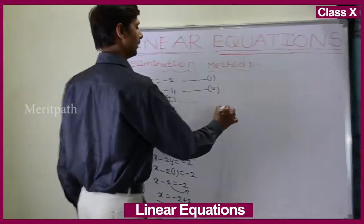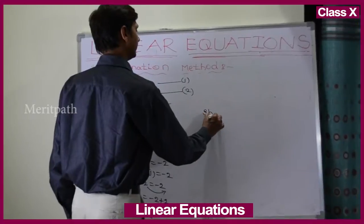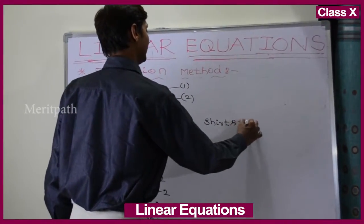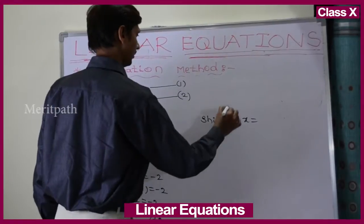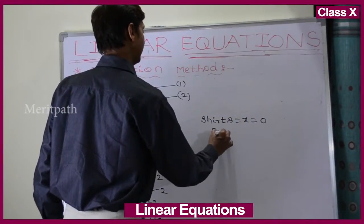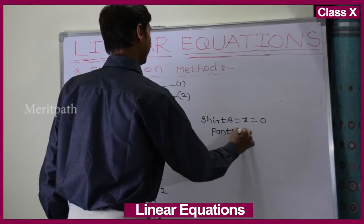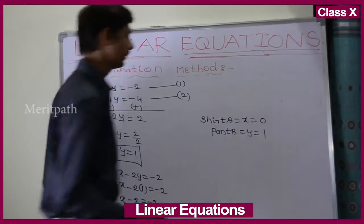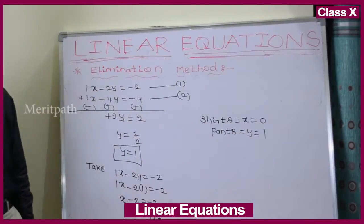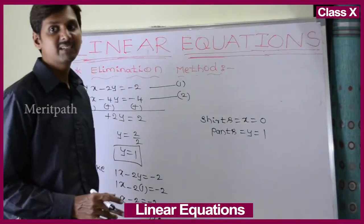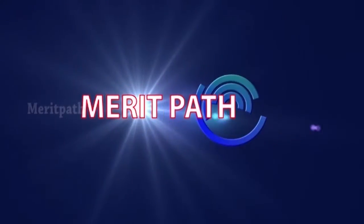We had taken shirts as x and packs as y. So x equals 0 and y equals 1. The number of shirts he purchased is 0, and the number of pants he purchased is 1.